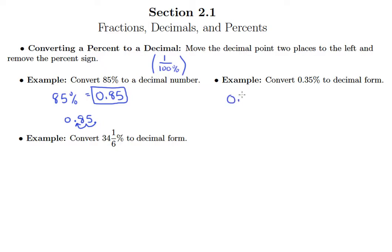In this example we have 0.35%. So I take the percent that I have, grab the decimal point, and move it two places to the left, giving me 0.0035.